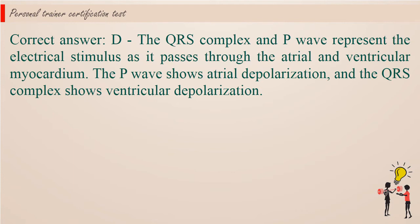The QRS complex and P wave represent the electrical stimulus as it passes through the atrial and ventricular myocardium. The P wave shows atrial depolarization, and the QRS complex shows ventricular depolarization.